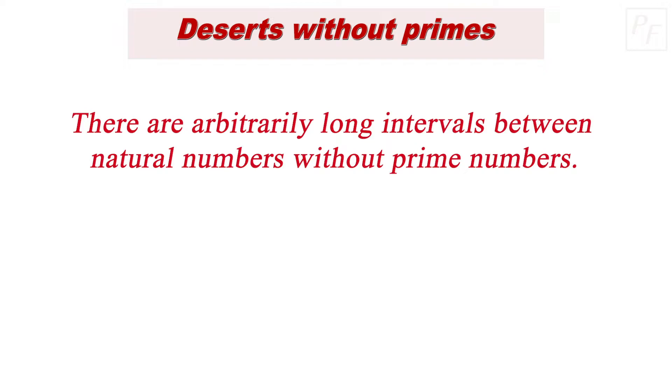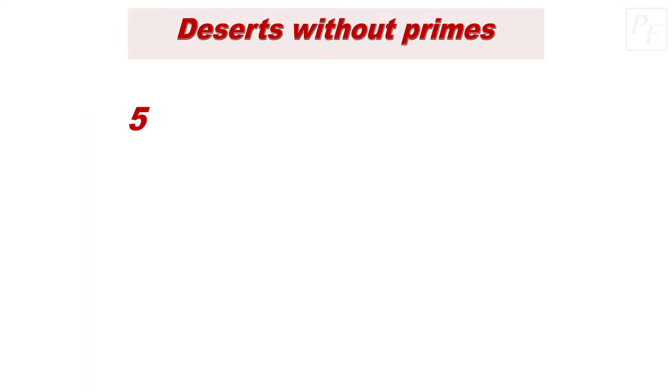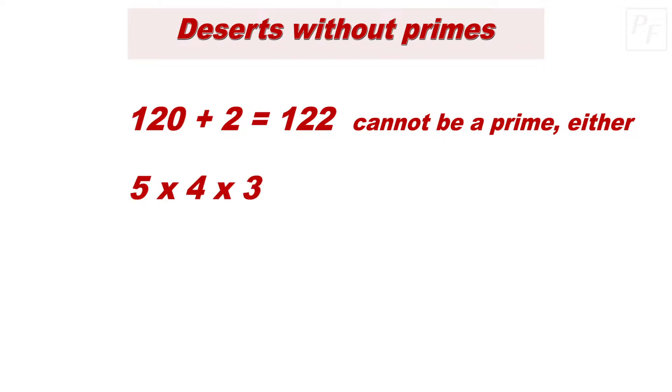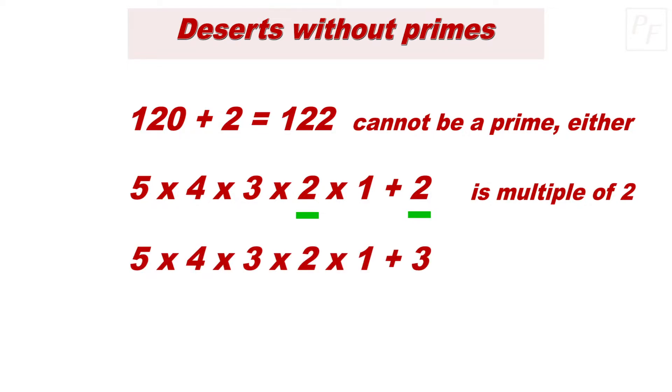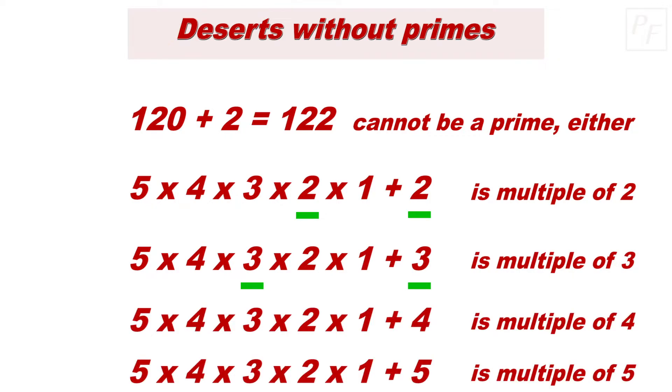Let's imagine that we build the following number: 5 times 4 times 3 times 2 times 1 equal to 120. This number cannot be a prime, of course, because it is a product of others. But if we add 2 to it, the result, 122, cannot be a prime either, since the result of the operation, 5 times 4 times 3 times 2 times 1 plus 2, is necessarily divisible by 2. If we add 3 to it, and for the same reason, the result, 5 times 4 times 3 times 2 times 1 plus 3, is divisible by 3, and the same goes for 4 and 5.